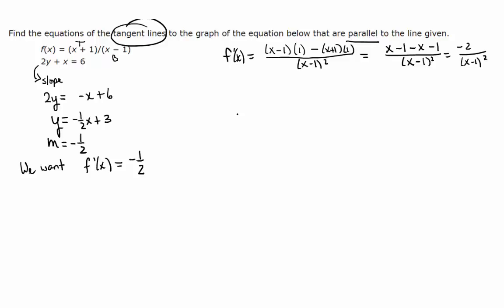So negative 2 over x minus 1 squared is our formula for slope. We want to find what x values make it turn out to be negative 1 half. So we have a little rational equation to solve. It's actually a proportion. So we can cross multiply.